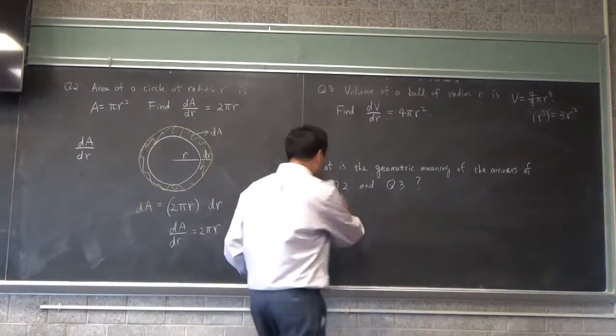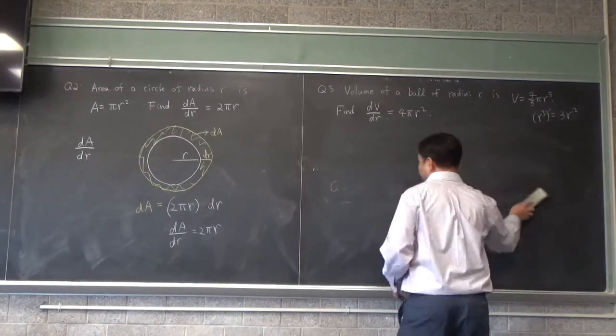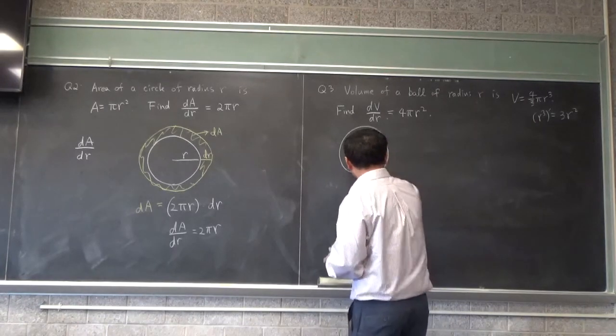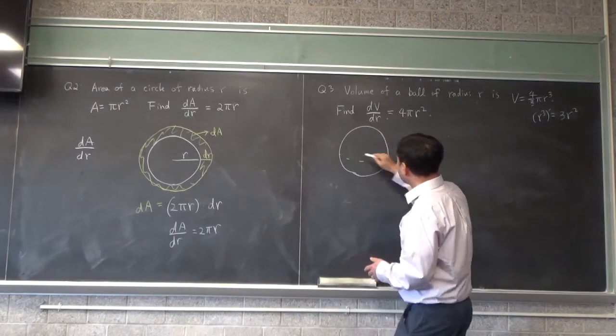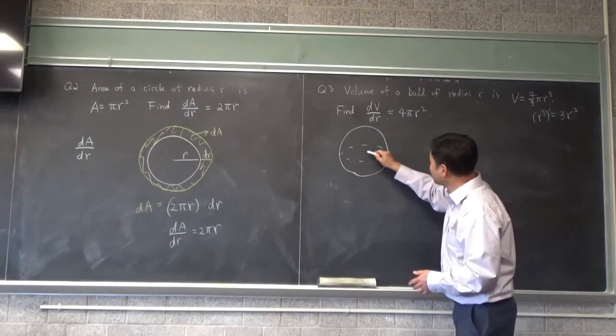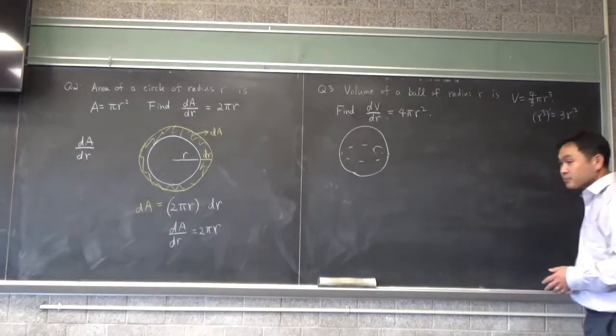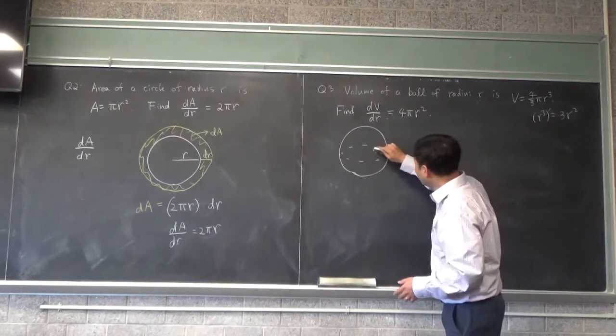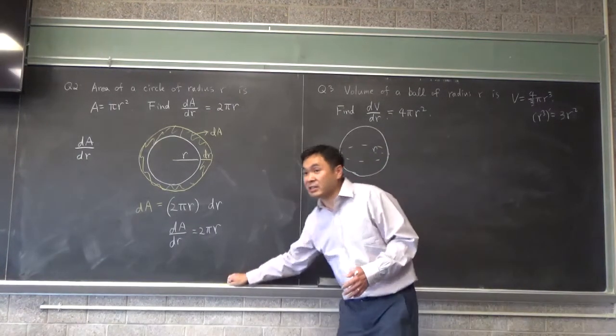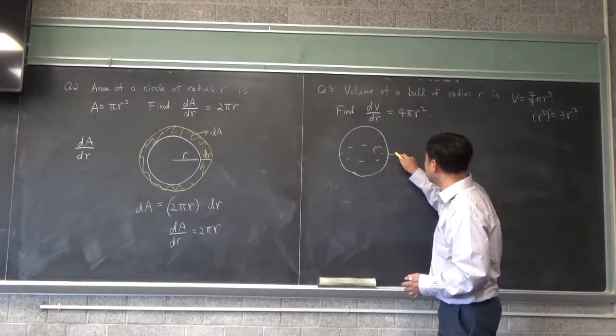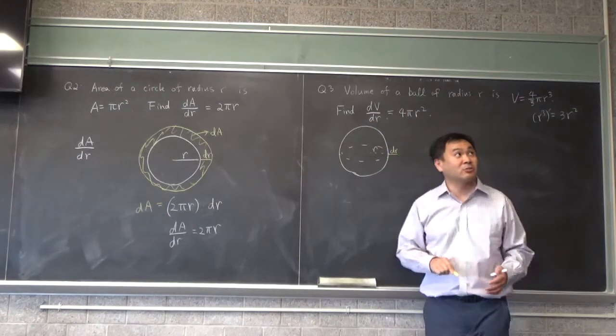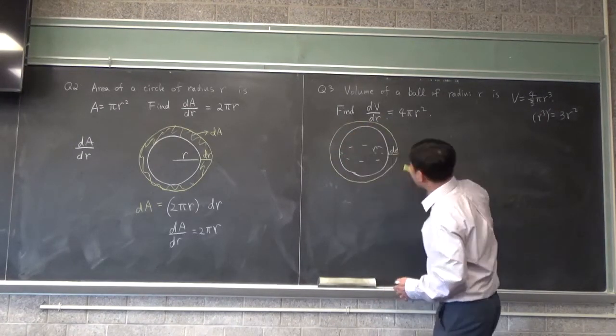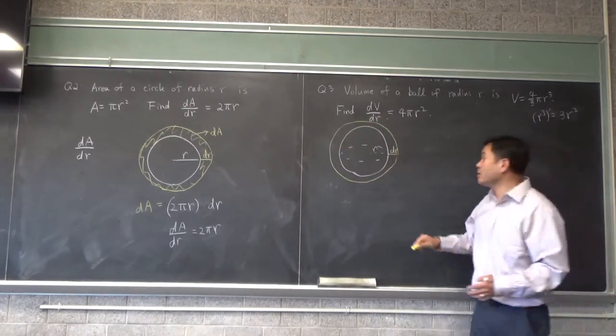This time you have a ball of radius r. So it's like a ball of radius r. So here it's r. And again, you want to increase this radius ever so slightly by dr. Increase by just a bit.